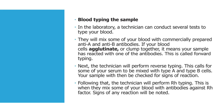Next, the technician will perform reverse typing, where some of your serum is mixed with type A and type B cells, and your sample is checked for signs of reaction. Following that, the technician will perform RH typing, mixing some of your blood with antibodies against the RH factor, and any signs of reaction will be noted.